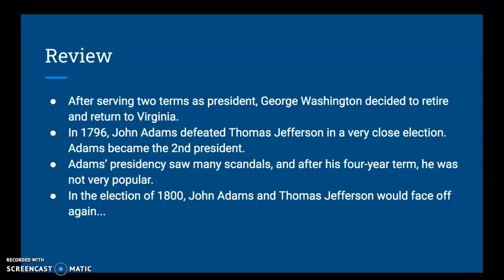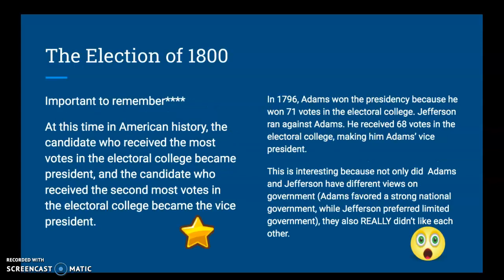So in the election of 1800, John Adams and Thomas Jefferson would face off again — back-to-back contests. This is maybe the craziest election that ever happened in United States history; it's certainly one of the most interesting. This is from about 220 years ago.